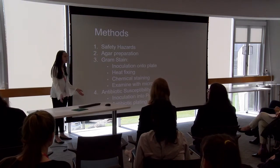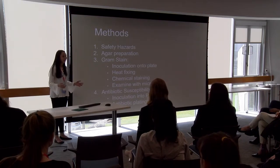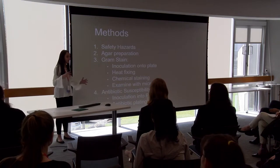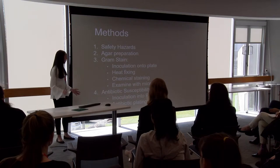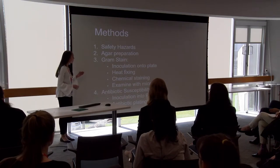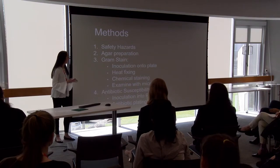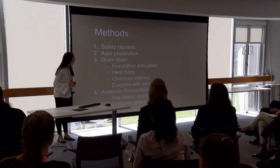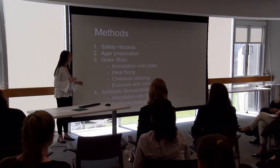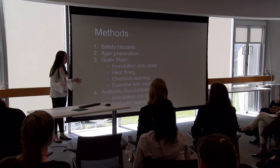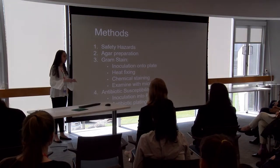For my methods, the first thing is safety hazards. I was working with bacteria, so I used 10% bleach-concentrated wipes, periodically changed my gloves, and concentrated everything that touched the bacteria into a bucket so nothing got reused by accident. The first real step was agar preparation, then the gram stain — inoculating bacteria onto a microscopic slide, heat fixing to denature the enzymes, chemical staining, and examining under a microscope. Then I did my antibiotic susceptibility test, inoculating the bacteria onto petri dishes and plating the antibiotics right after, with three trials for each combination of antibiotic type and bacteria type.